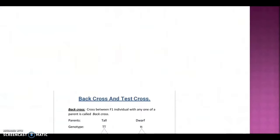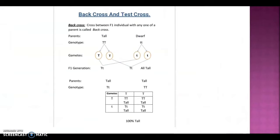Back cross means a cross between an F1 individual with any one of the parents — that is called a back cross. We study different types of crosses like monohybrid cross and dihybrid cross, and here we study back cross.